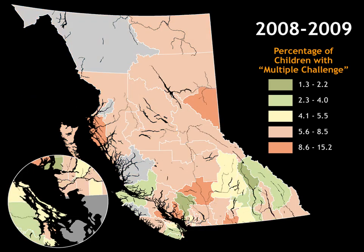Finally, in 2008 to 2009, the proportion of multiple challenge children dropped slightly back to 6.1 percent, but not back to the original 5.4 percent seen in wave one. The mode across the province is the light reddish brown, where 5.6 to 8.5 percent of children came up on the Multiple Challenge Index. Essentially, about one out of every 14 children in the province is coming up multiply challenged, and in many school districts, kindergarten and grade one teachers are dealing with two or three multiply challenged children in their classes.